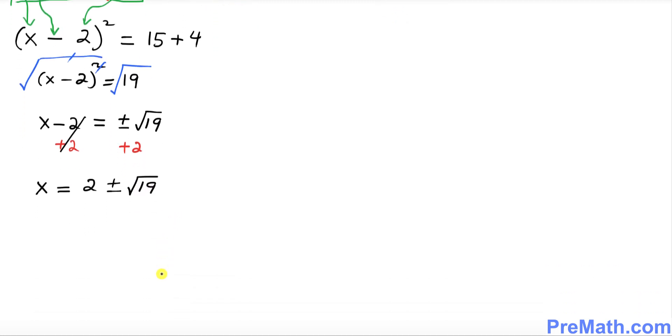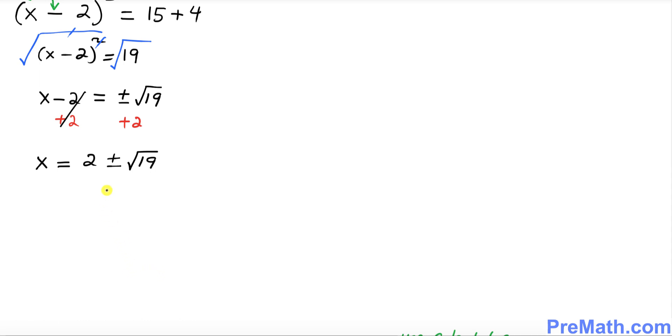Now we're going to split them up along these positive and negative signs. So the first solution is going to be x = 2 + √19.